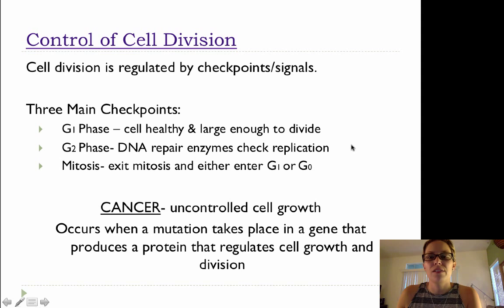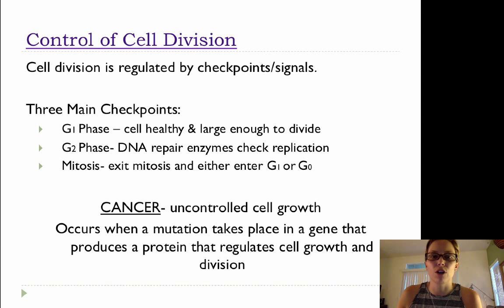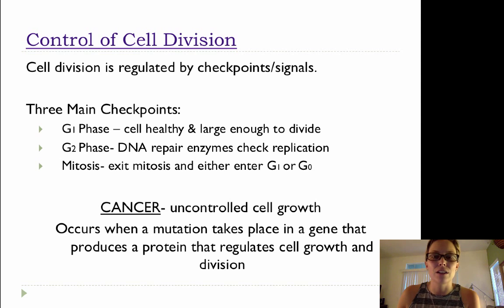Control of cell division: the cell cycle is regulated at different checkpoints, and there are different signals that regulate the cell cycle. That's the series of events that cells go through to prepare to divide and then divide — interphase and then cell division, which consists of mitosis and cytokinesis.